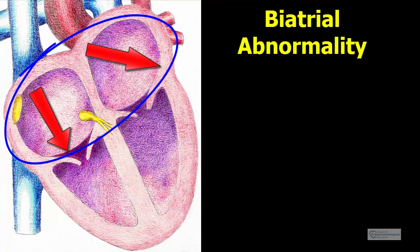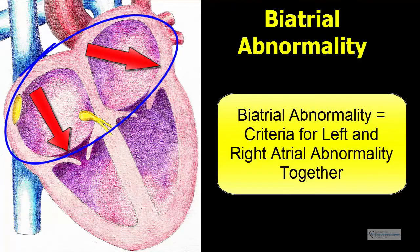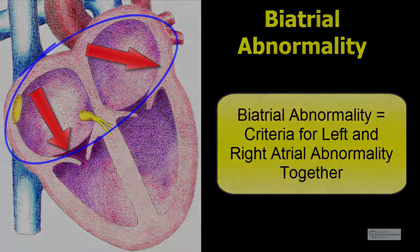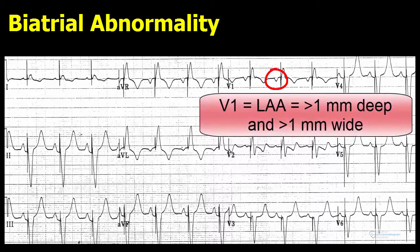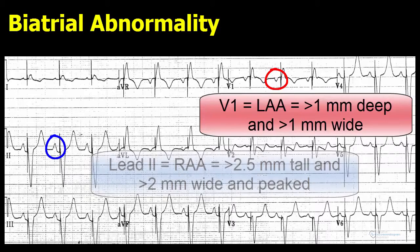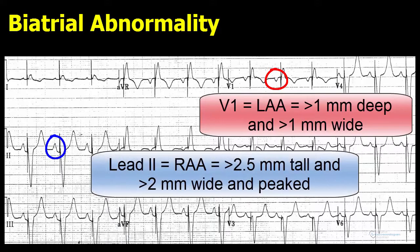Biatrial abnormality is simply both criteria for left atrial abnormality and the criteria for right atrial abnormality on the same electrocardiogram. In this ECG, we can see an inverted P wave in lead V1 that is more than one box deep and one box wide, suggesting left atrial abnormality. And the P wave in lead 2 is 2.5 boxes tall, 2 boxes wide, and is peaked, suggesting right atrial abnormality.